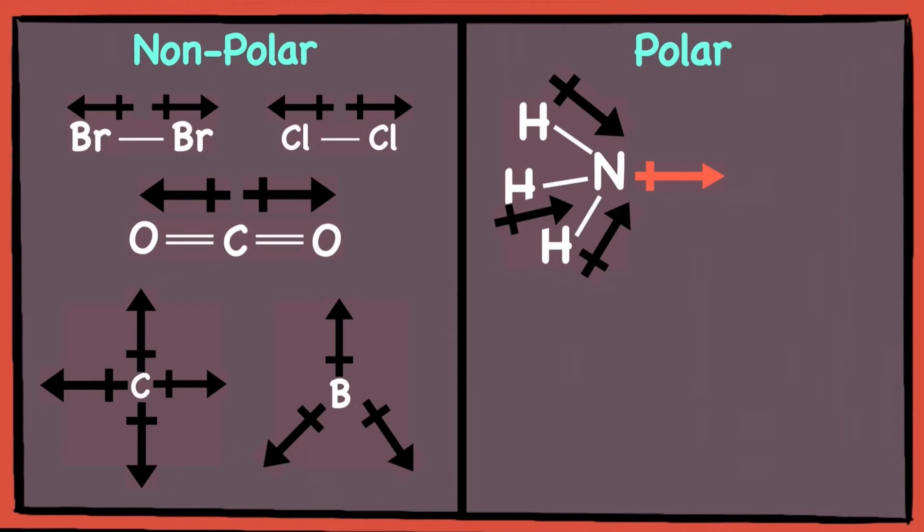Next, a water molecule has a bent shape, unlike what we saw in carbon dioxide, which is linear in shape. Since oxygen is more electronegative, its dipole moment arrow will point towards the oxygen atom. Thus, there will be a net dipole moment in a water molecule, making it a polar molecule.